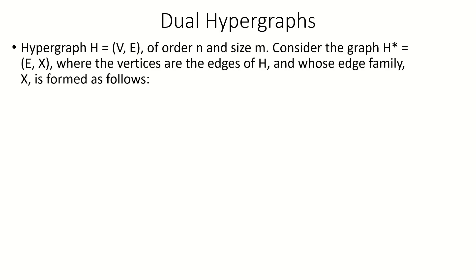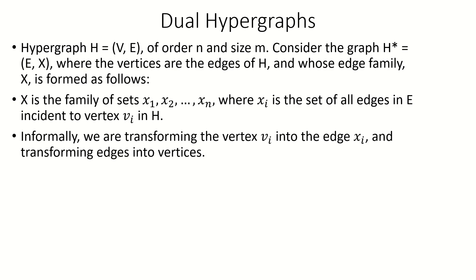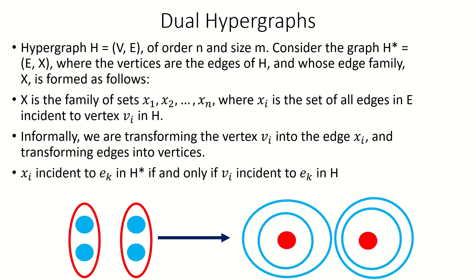Now, what would happen if we took a hypergraph H and built a new hypergraph H*, whose vertices are the edges in H, and whose edge family X is defined as follows. X is the family of sets X sub 1, X sub 2, and so on up to X sub n, where X sub i is the set of all members of E that contain vertex V sub i in hypergraph H. Our operation converts an edge E in the original hypergraph into a vertex E in H*, and converts a vertex V sub i into an edge X sub i that is incident to all the vertices in H* corresponding to edges incident to V sub i in the original. Note that an edge X sub i is incident to a vertex E sub k in H* if and only if vertex V sub i and edge E sub k are incident in H.